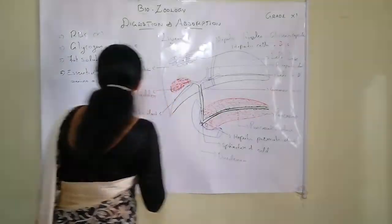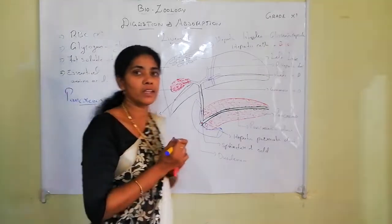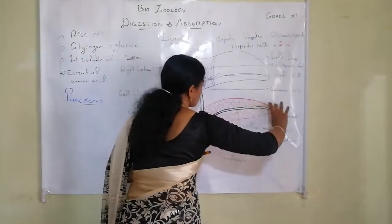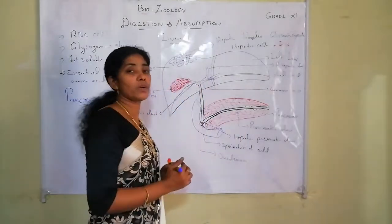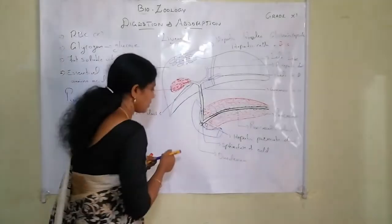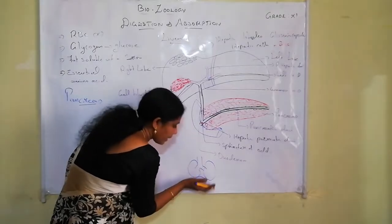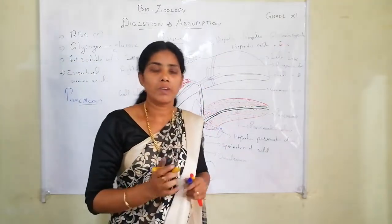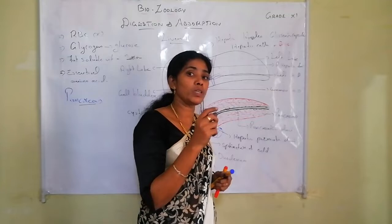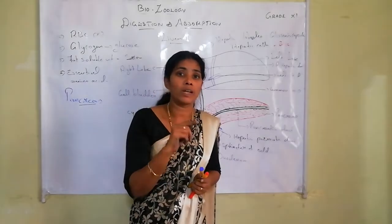The next digestive gland is the pancreas — the second largest digestive gland. It is a long tubular structure located below the diaphragm, near the liver. The pancreas performs a dual role: it functions as both an exocrine gland and an endocrine gland.